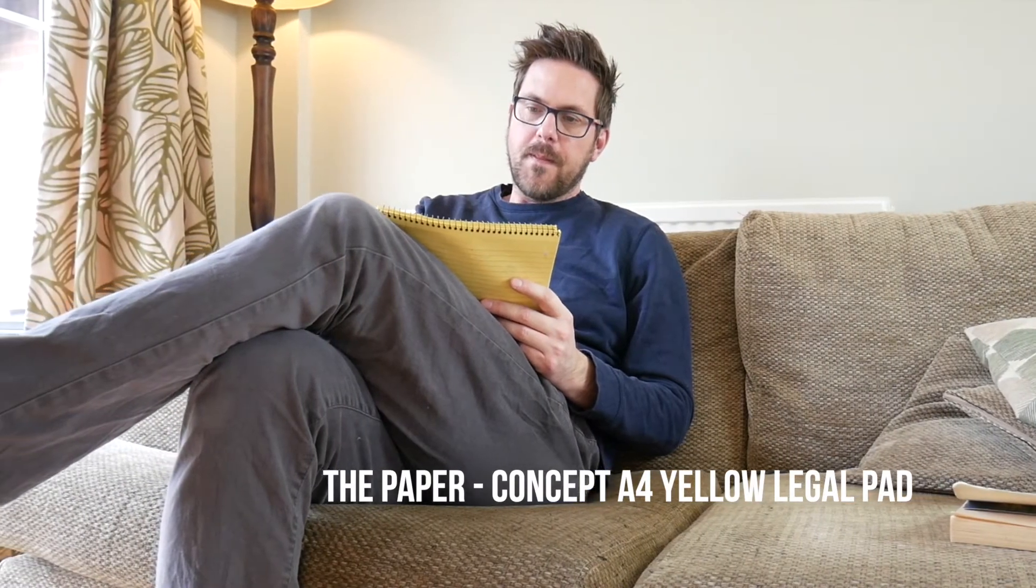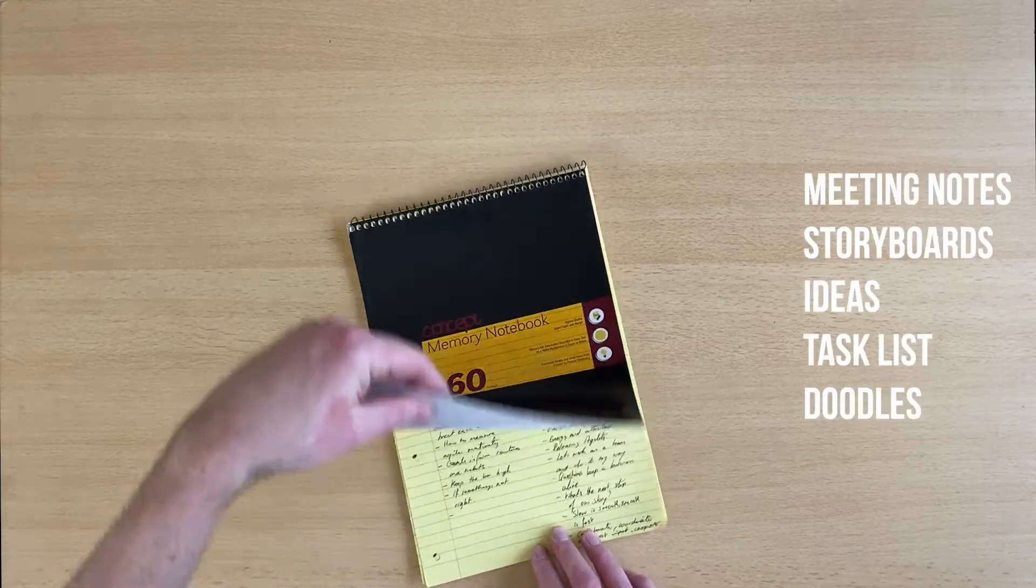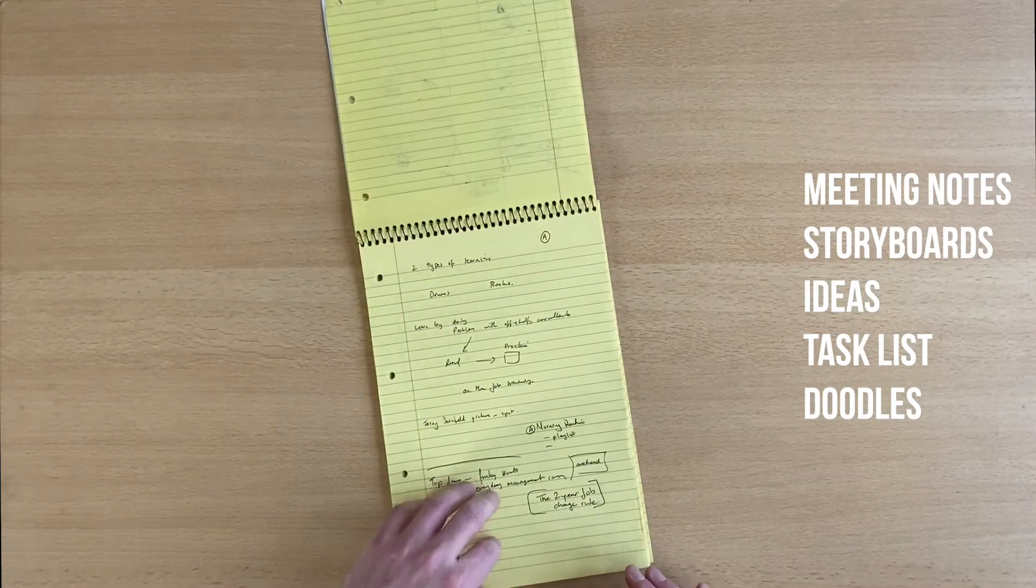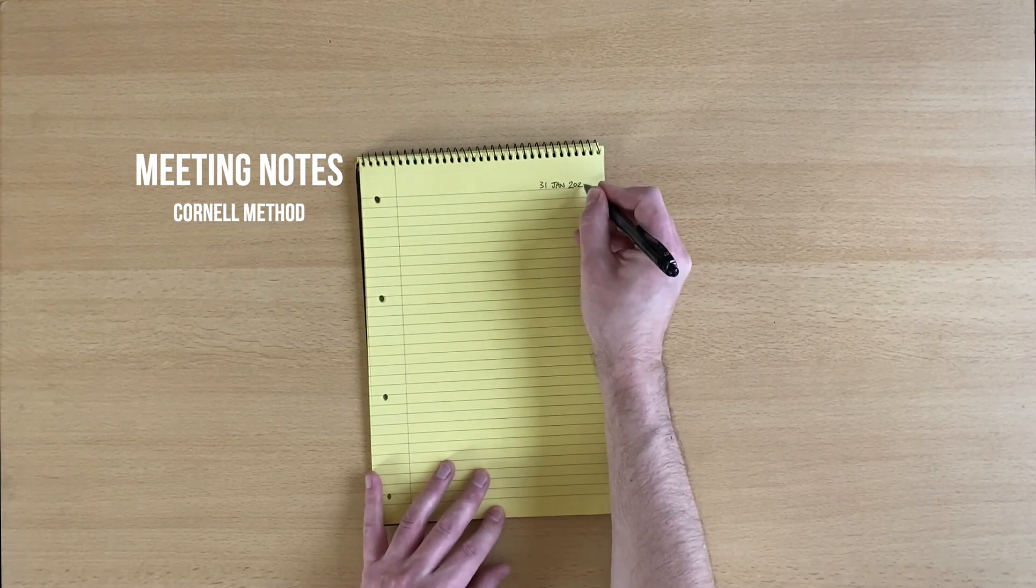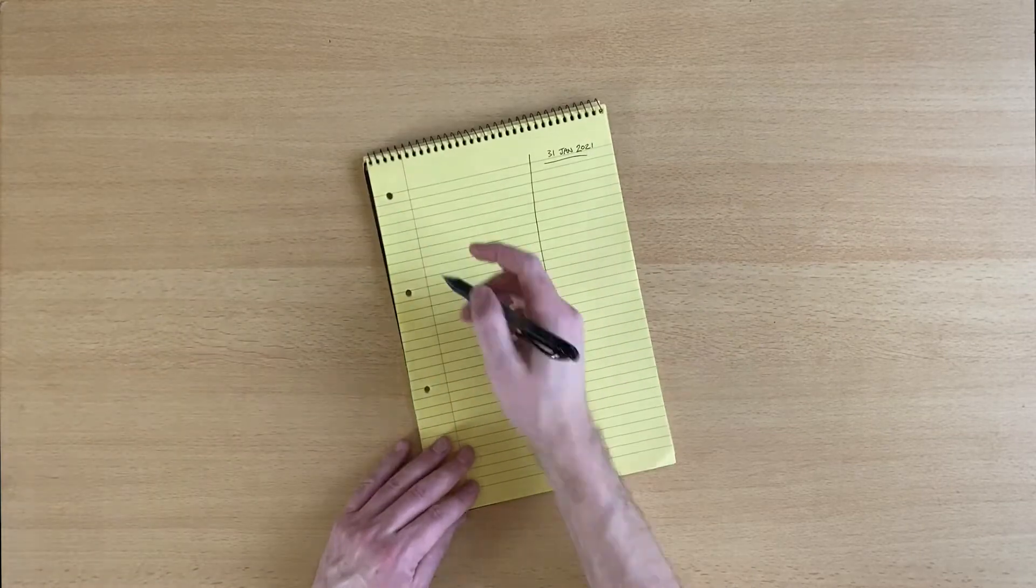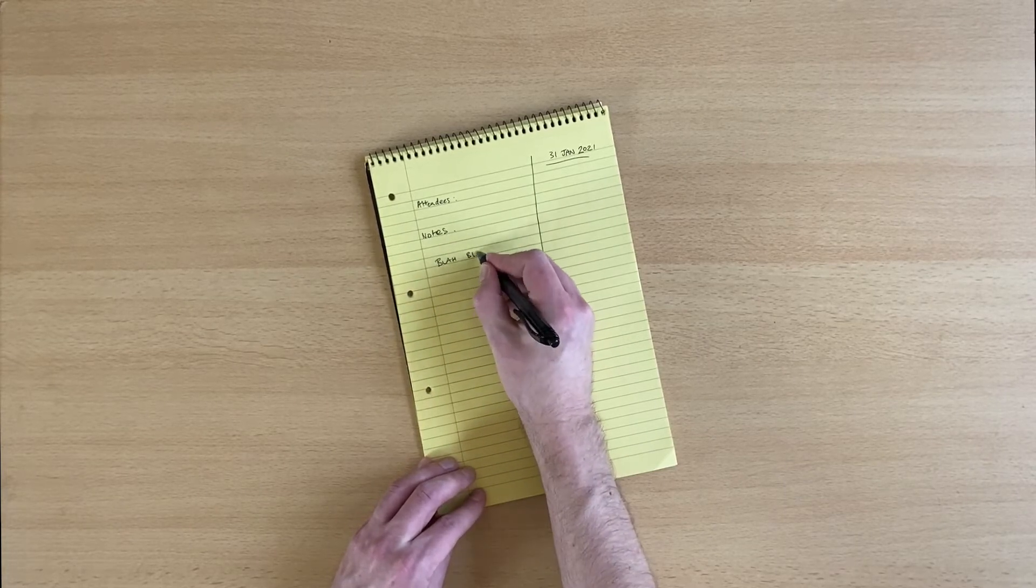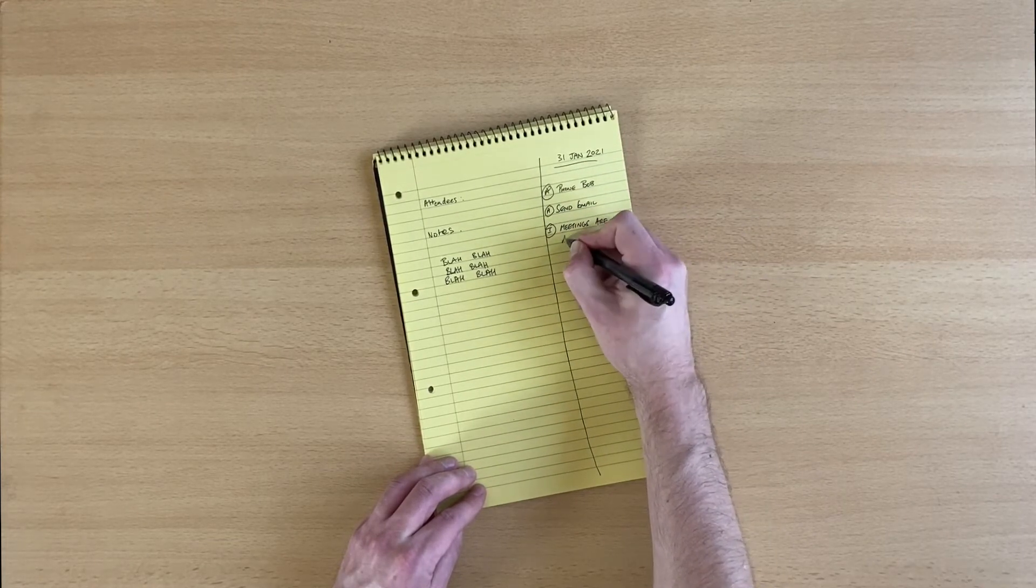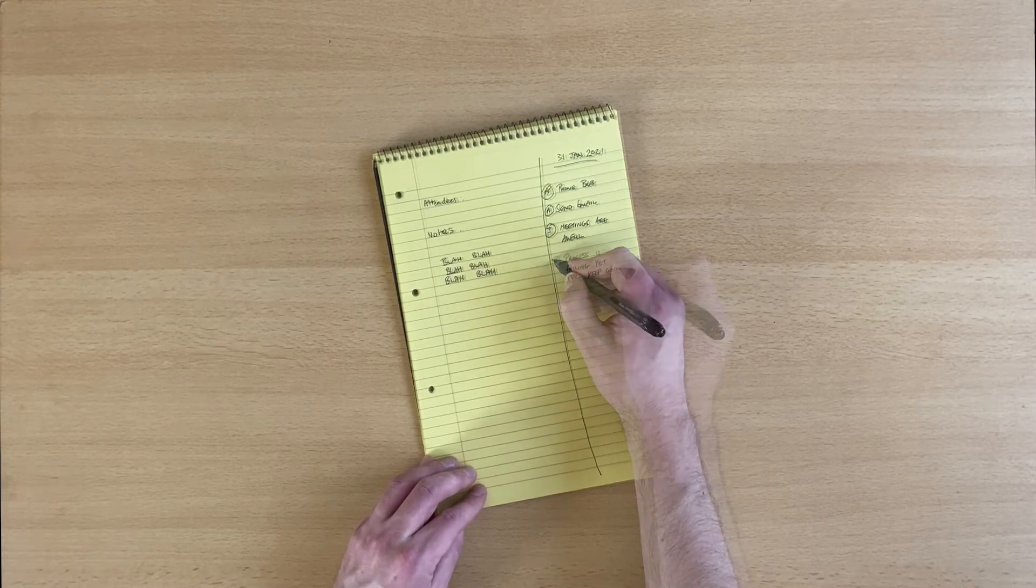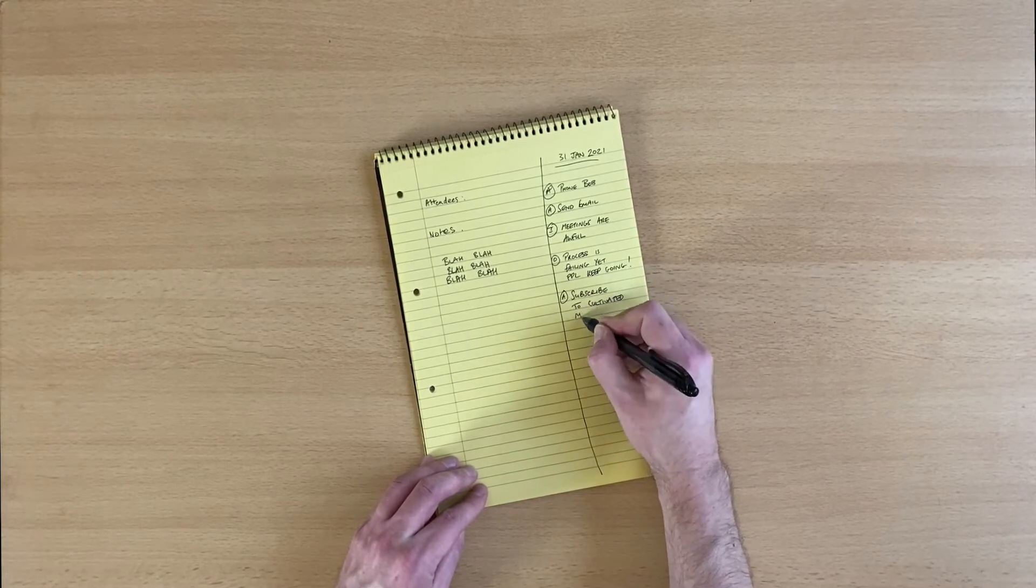For me, my paper of choice is a Concept A4 yellow legal pad. I use them for meeting notes, storyboards, and ideas. I use something called the Cornell method where you draw a line down the side. You make all the notes from meetings on the left - things people said, attendees, notes. On the right hand side you put actions, information points, follow-ups, or new ideas that spawn from the main piece on the left. The Cornell note-taking method is not the only one - there are loads out there. Experiment and find what works for you.